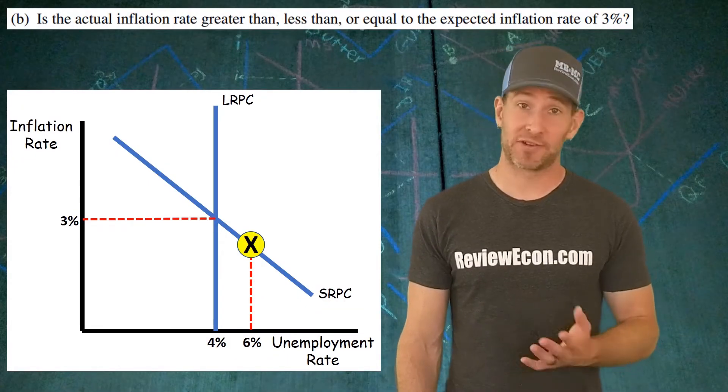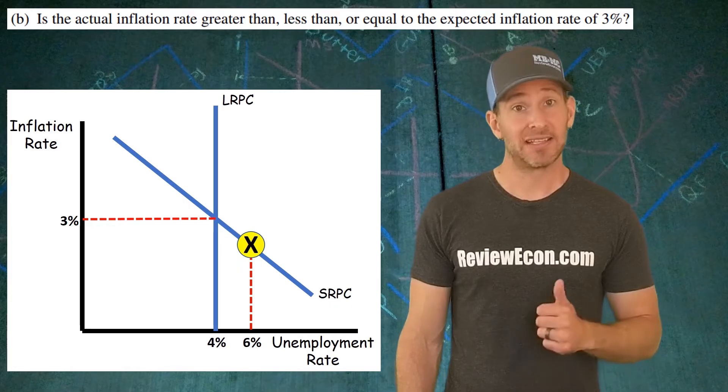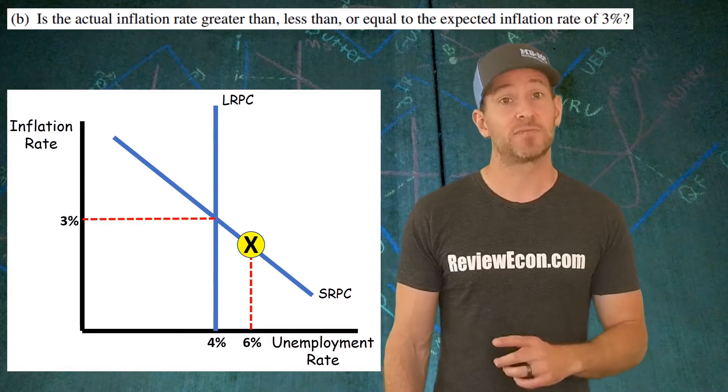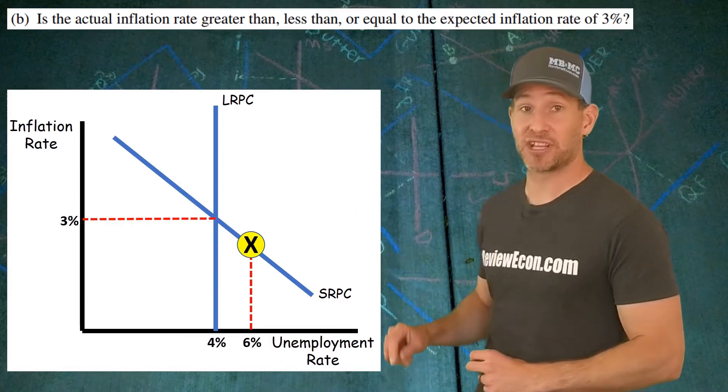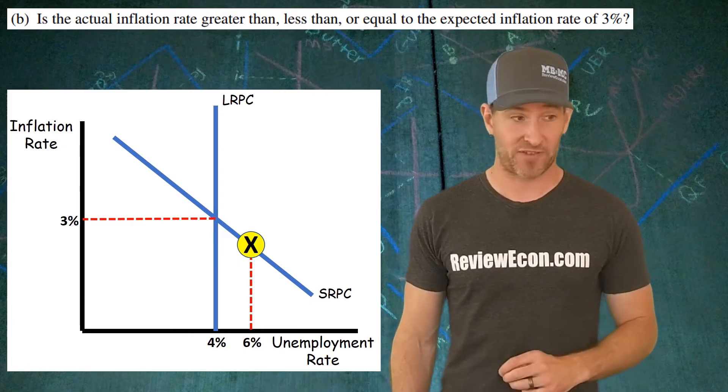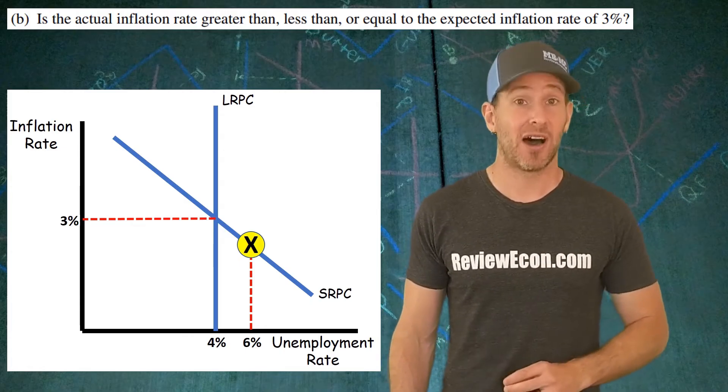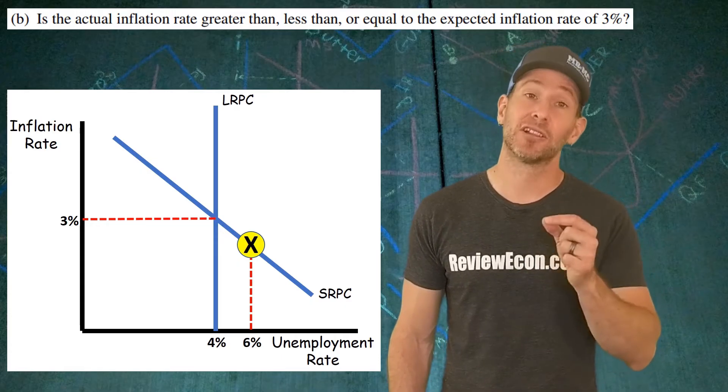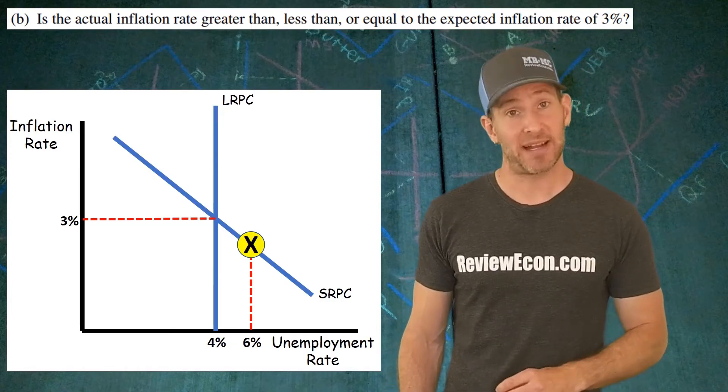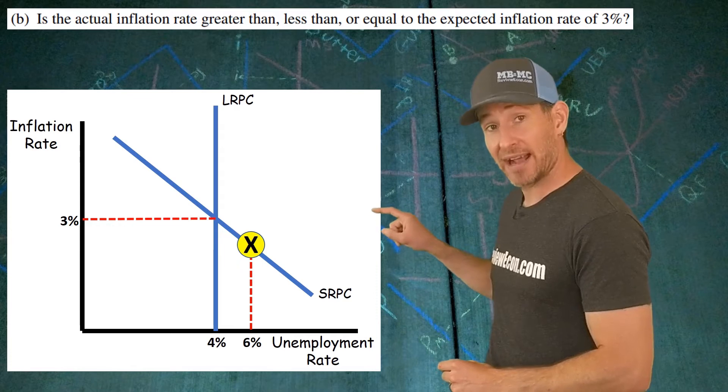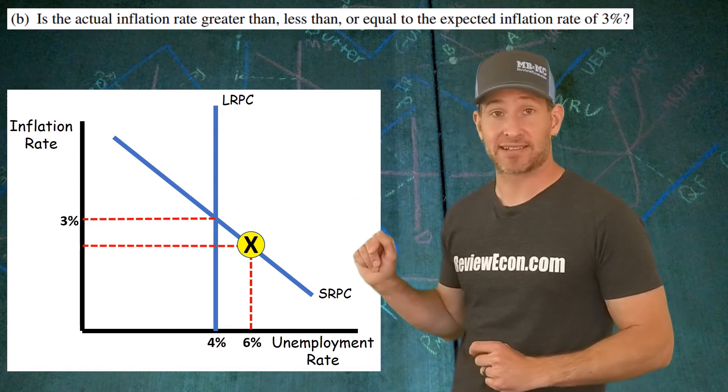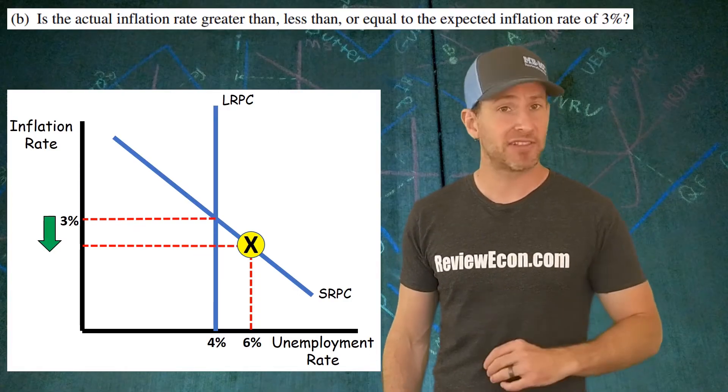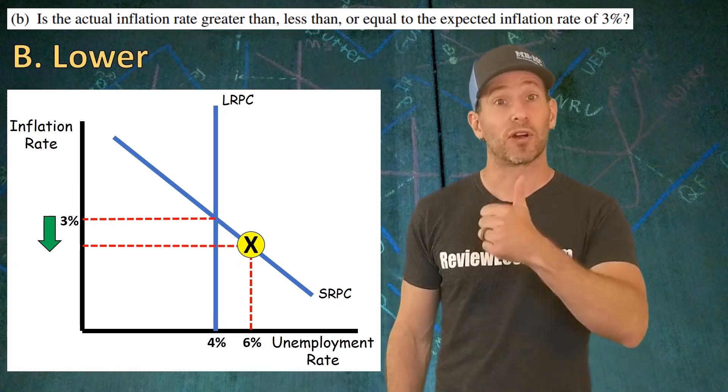For part B, we have to identify if the current rate of inflation is greater than, less than, or equal to the expected rate of inflation. As I mentioned before, the expected rate of inflation is at that intersection between the short run Phillips curve and the long run Phillips curve. Since we have a higher unemployment rate than the natural rate of unemployment at 4%, that also means that we have a lower inflation rate than expected. You can find that by taking that point X that you already identified and bringing it to the Y axis. That shows we have a lower than expected rate of inflation. You don't have to add this to the graph. Just identify it. Lower. You've got your point.